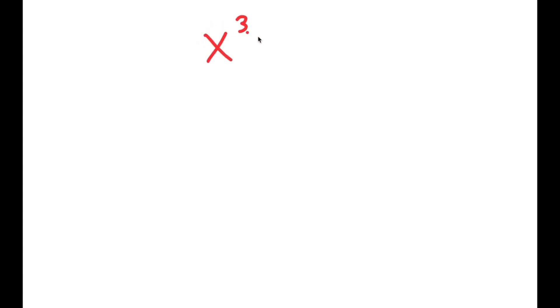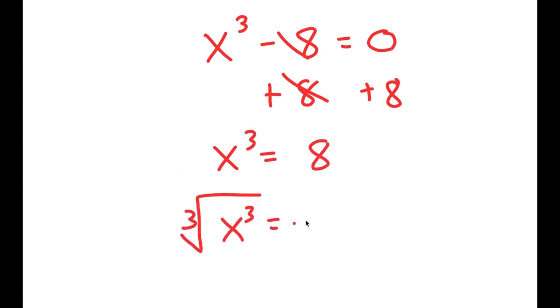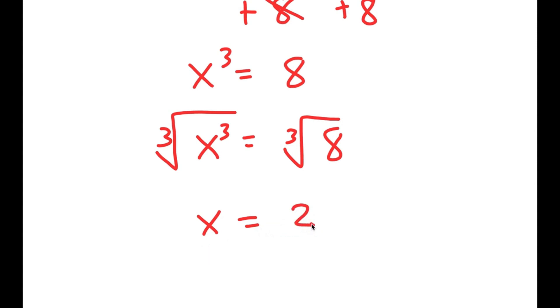In this video, I'm going to solve the equation x to the power of 3 minus 8 is equal to 0. The way most people solve this is they add 8 on both sides to get x to the power of 3 is equal to 8, and then take the cube root on both sides. The cube root of x cubed is x, and the cube root of 8 is 2. So they get x equals 2, which is a solution.